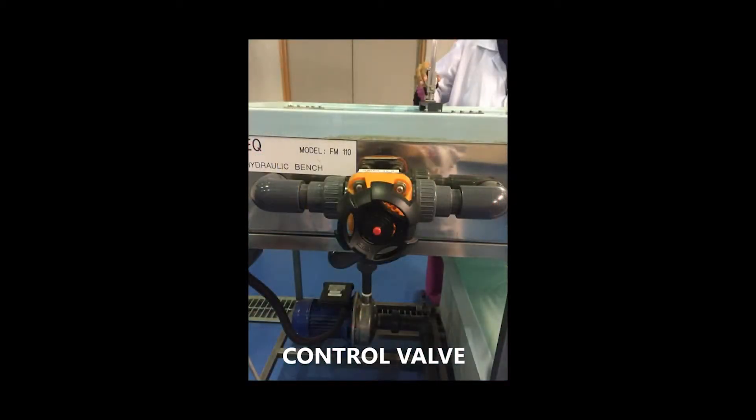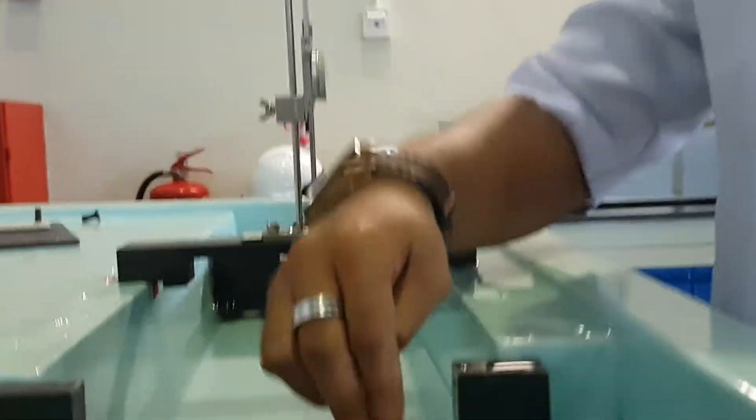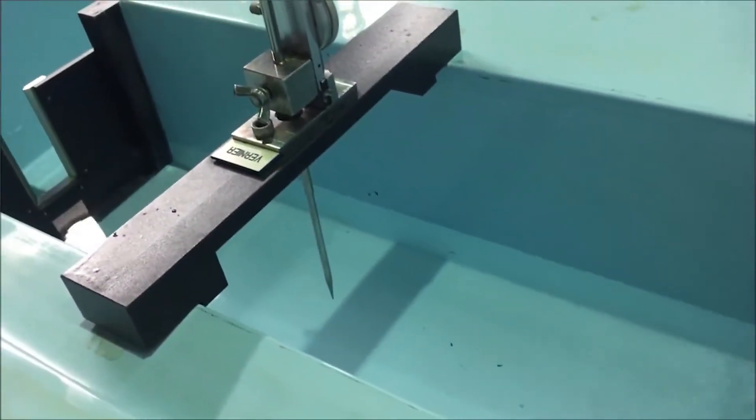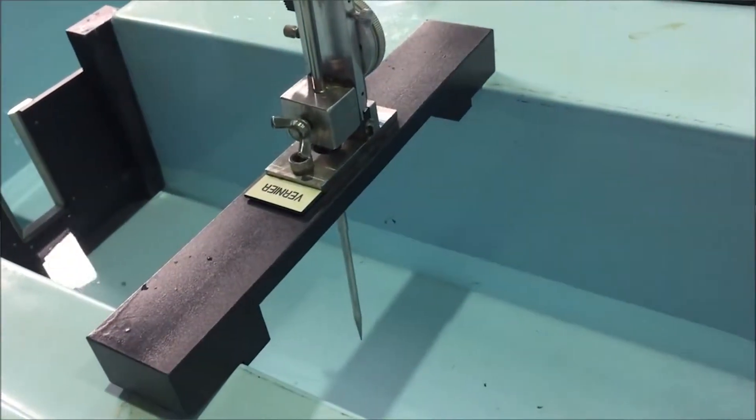For the policy here, what we need to do first is we need to install the notch here. The notch that we are using for the experiments, either the V-notch or the rectangular notch.